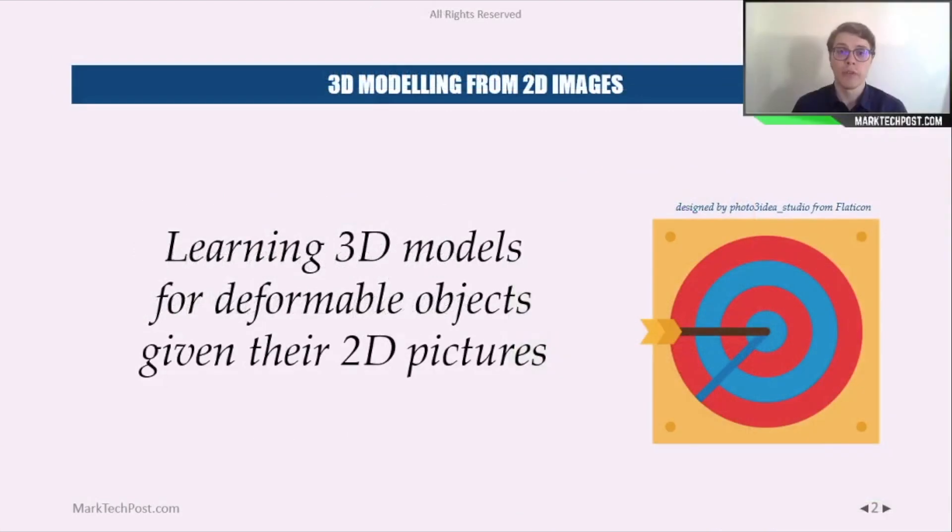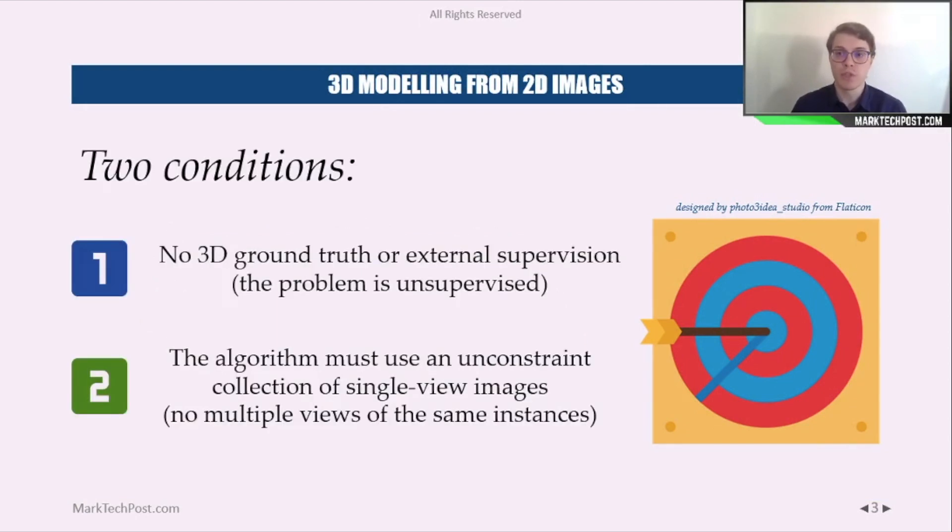So the goal of the project was to learn 3D models from deformable objects given their 2D pictures. But the researchers put some constraints on how they could solve the problem. First, they explicitly wanted to solve an unsupervised problem, so no ground truth or external supervision was given. In fact, it is expensive and challenging to label a big dataset for this purpose.